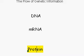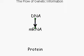Now to indicate the flow of information, let's connect the DNA to mRNA with an arrow. Make sure the arrow points from DNA to mRNA. Also, let's connect an arrow from mRNA to protein. This diagram represents the usual protein production pathway in a cell.